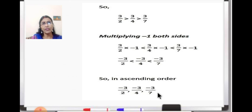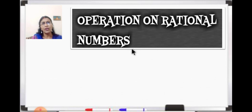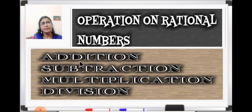If in the question descending order is given, then you write from the greatest number to the smallest one. If ascending order is given, then from smallest to the greatest. Now next we are going to understand operations on rational numbers. You have already learned addition, subtraction, multiplication, and division on integers as well as on fractions. Today we will understand these operations on rational numbers.